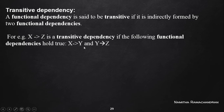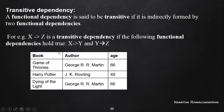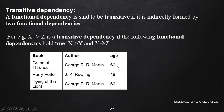That means X derives the Y attribute value, and Y derives the Z attribute value. Then we can indirectly derive Z from X with the help of Y. Consider an example: a publication relation with attributes book, author, and age of author. If an author name is given, we can identify the age of that author, because the age attribute is dependent on the author.